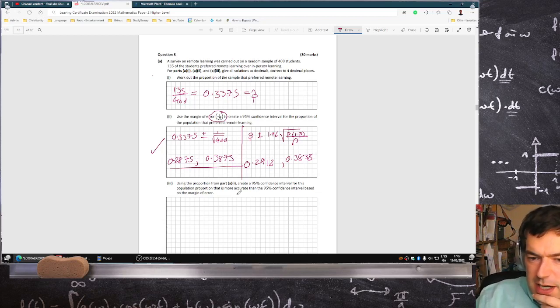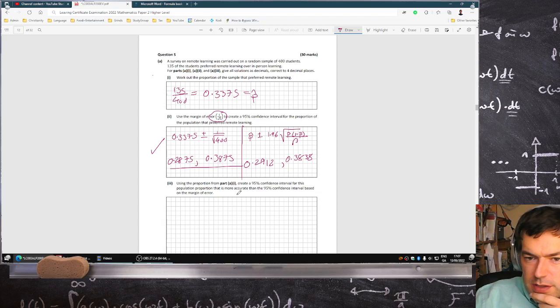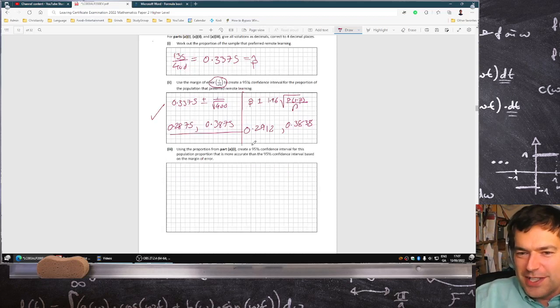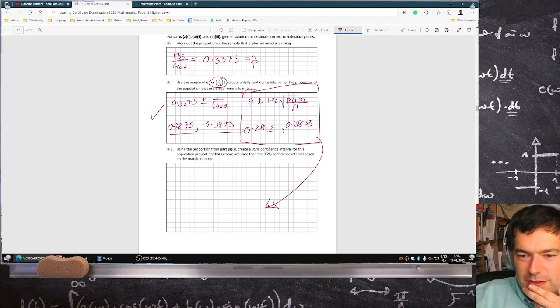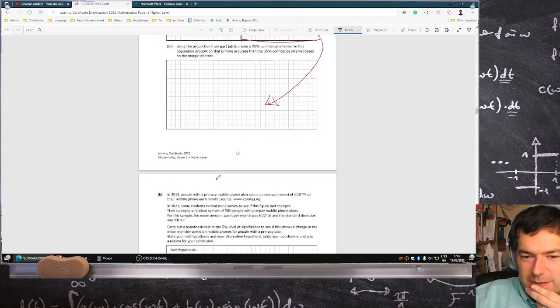Use the proportion from part A1 to create a 95% confidence interval for this population proportion that is more accurate. Oh, that's so hilarious. I literally just did that in part two right here. That's literally what I just did. Isn't that gas? That's so funny. All right.